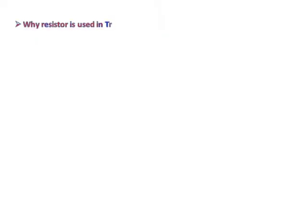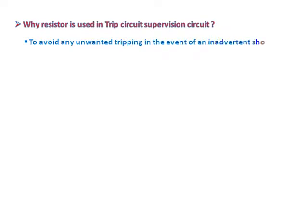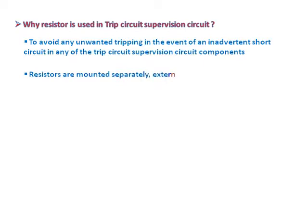Why is a resistor used in the trip circuit supervision circuit? To avoid any unwanted tripping in the event of an inadvertent short circuit in any of the trip circuit supervision circuit components. Resistors are mounted separately, external to the relay, and are added in series with coils A, B and C.